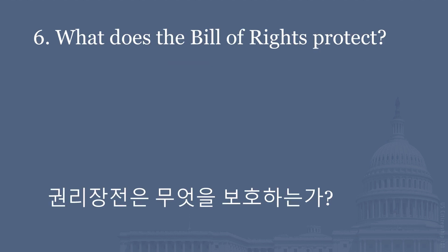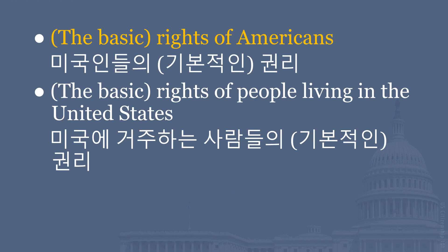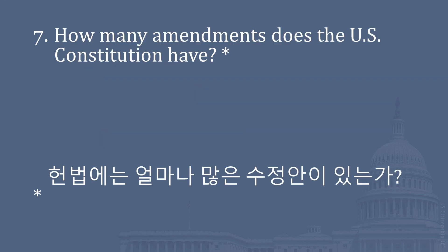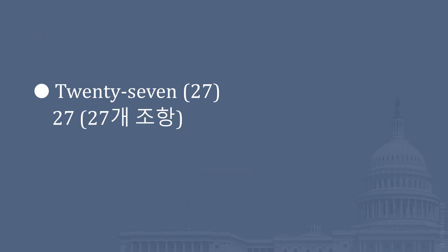What does the Bill of Rights protect? The basic rights of Americans. The basic rights of people living in the United States. How many amendments does the U.S. Constitution have? Twenty-seven.